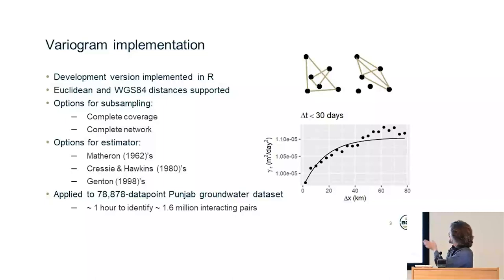So I've applied this to a 78,875 data point Punjab groundwater dataset. So rather than taking 32 gigabytes of RAM, which would be required if I were comparing all pairs of data points, I can analyze only 1.6 million interacting pairs. It's in R, so it's still not amazingly fast, but it takes about an hour, and you can create this lovely variogram on the right.